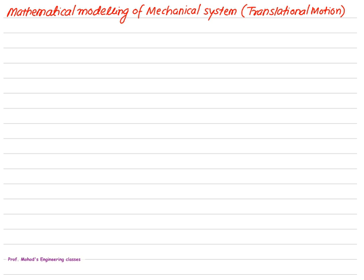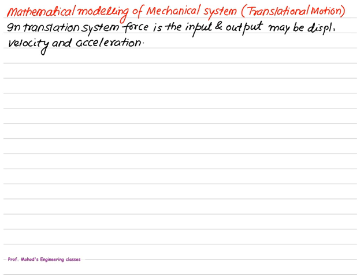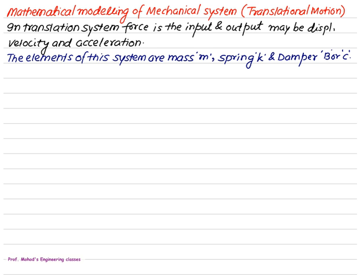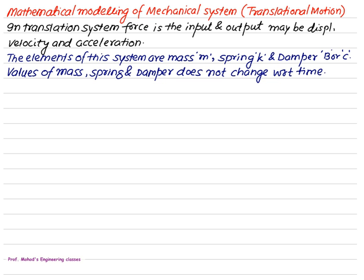The very basic one is a mechanical system in which we will first try to understand translational motion. In the translational system, the motion of a body takes place along a straight line. The input is the force and output may be the displacement, velocity, or acceleration. The elements of the system are mass represented by m, spring k, and damper, for which either letter b or c is used.